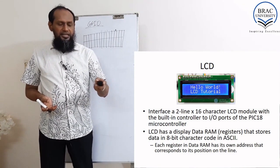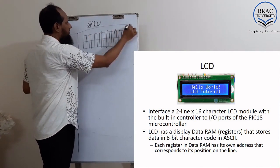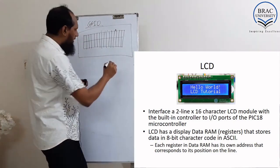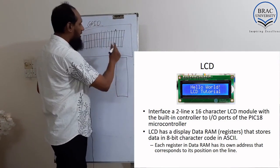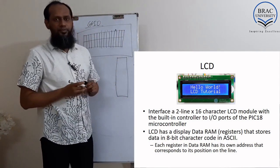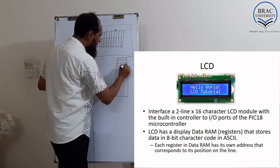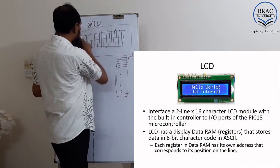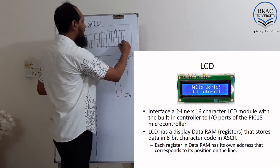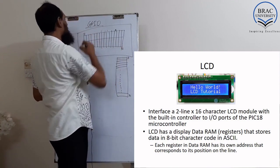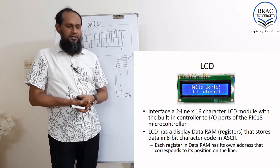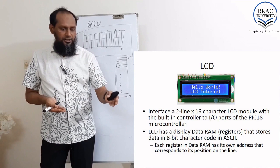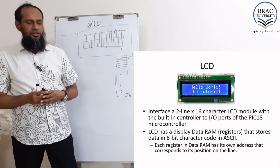LCD has a display data RAM. Inside the LCD display, there is actually a microcontroller unit. We also have a RAM with 32 locations, each location corresponding to each display position. If we address 0 for the first position and 31 for the last, each register in the data RAM has its own address corresponding to its position on the line. The RAM stores ASCII characters.